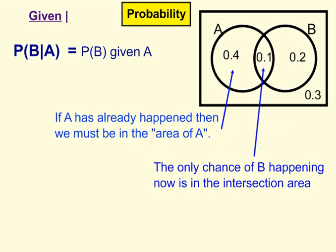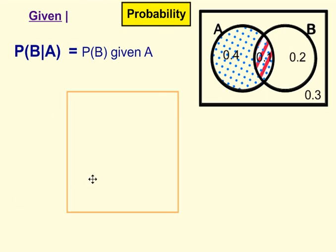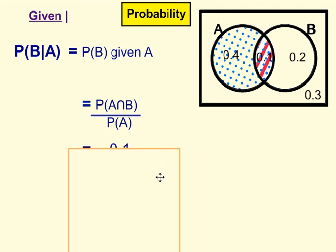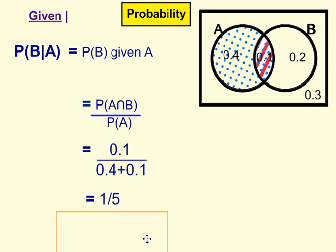Second example: the probability of B given A — the probability of B happening given that A has already happened. If A has already happened, then we must be in the area of A, inside this circle. The only chance of B happening now is in this intersection area — that's the only place where B is confined within A. We write that symbolically as the probability of A intersection B divided by the probability of A — this whole circle. So we get 0.1 over 0.4 plus 0.1, the whole circle of A, giving us 1 over 5.